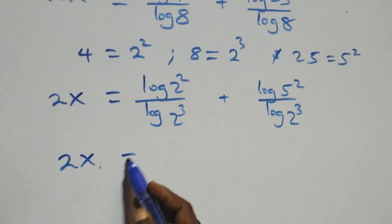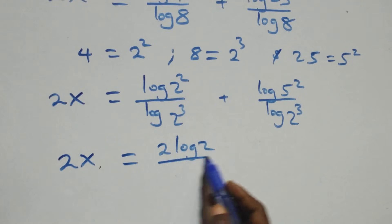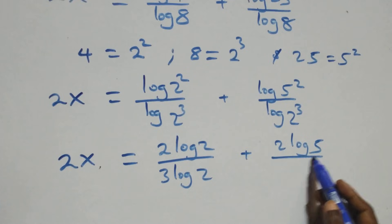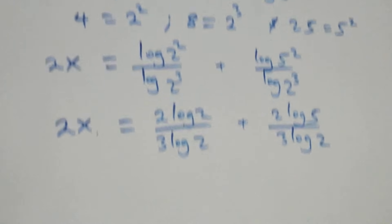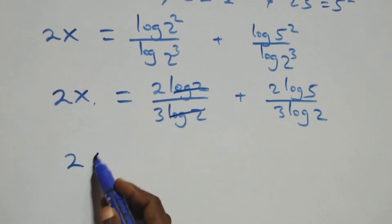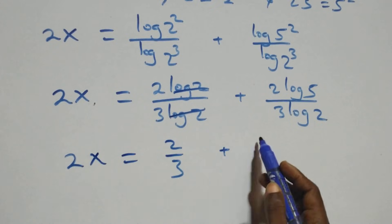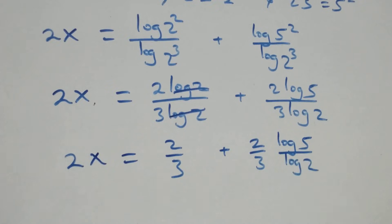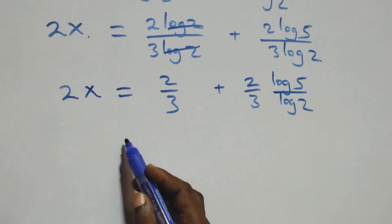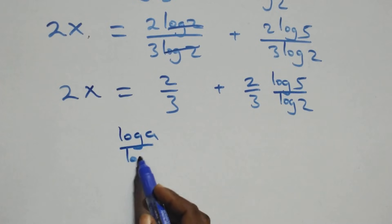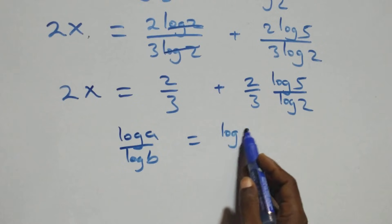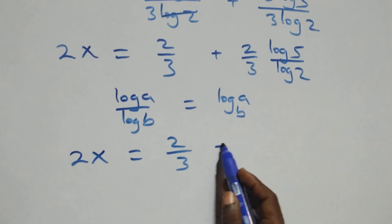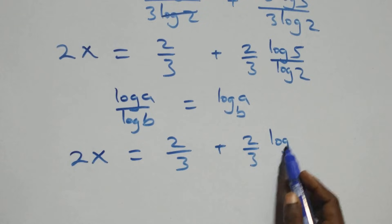This becomes 2x equals 2 log 2 over 3 log 2 plus 2 log 5 over 3 log 2. The log 2 terms cancel each other, giving 2x equals 2 over 3 plus 2 over 3 multiplied by log 5 over log 2. Applying the change of base formula — log a over log b equals log a to base b — we get 2x equals 2 over 3 plus 2 over 3 times log 5 base 2.